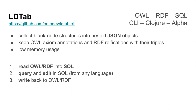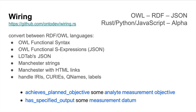LDtab is a tool that we've recently been building to work with RDF and OWL in a SQL database. We can read OWL or RDF into SQL, then query and edit in the SQL table from any language that can speak SQL, which is pretty much anything. Then we can write back to OWL and RDF. Part of the trick is a library called Wiring, which lets us convert back and forth between little RDF languages, such as LDtab's JSON format and Manchester strings with HTML links, which we need for our ontology browsers and other tools.